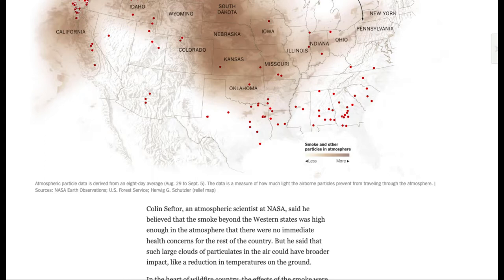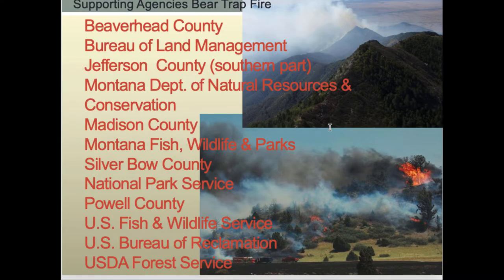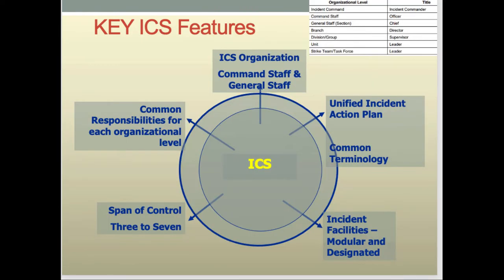The Incident Command System can't answer all of these questions, but it sure gets us organized to address them. That Bear Trap fire had over 12 entities working together, including Beaverhead County, Jefferson County, Madison County, Montana Department of Natural Resources and Conservation, Silver Bowl County, Powell County, Fish, Wildlife and Parks, and the Forest Service. Each one of these has a chief, so how do we choose who is the right chief to be at the top of this incident command system?